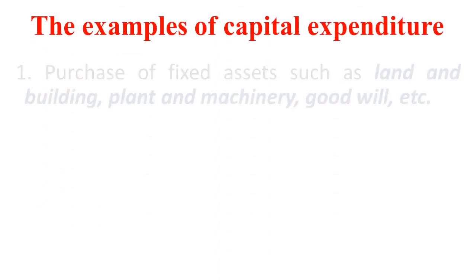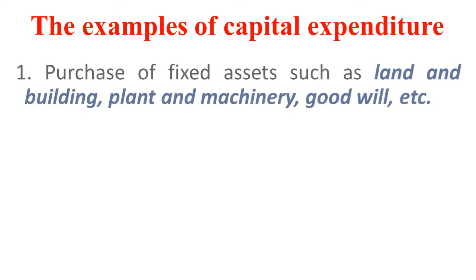The examples of capital budgeting expenditure are: purchase of fixed assets such as land and building, plant and machinery, goodwill, patent rights, copyrights, or any fixed asset which can be used for running the business.